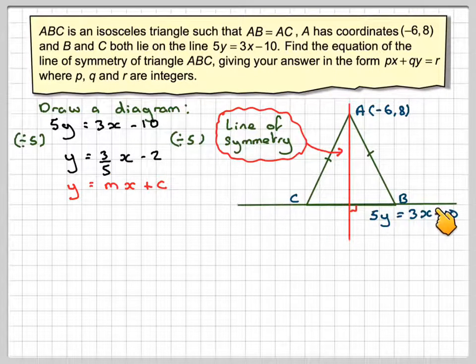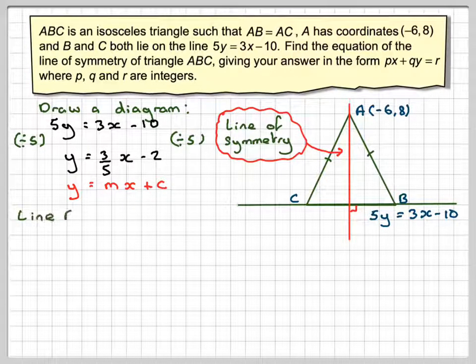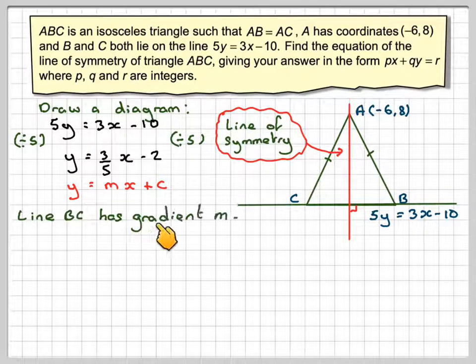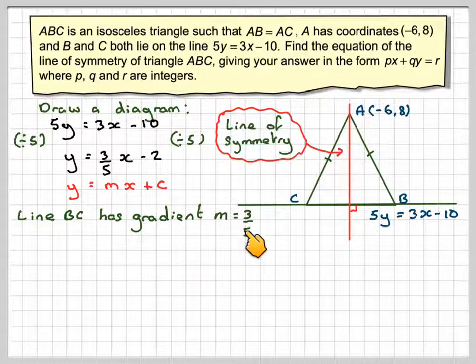The gradient of this line is 3/5. So line BC has gradient M = 3/5.